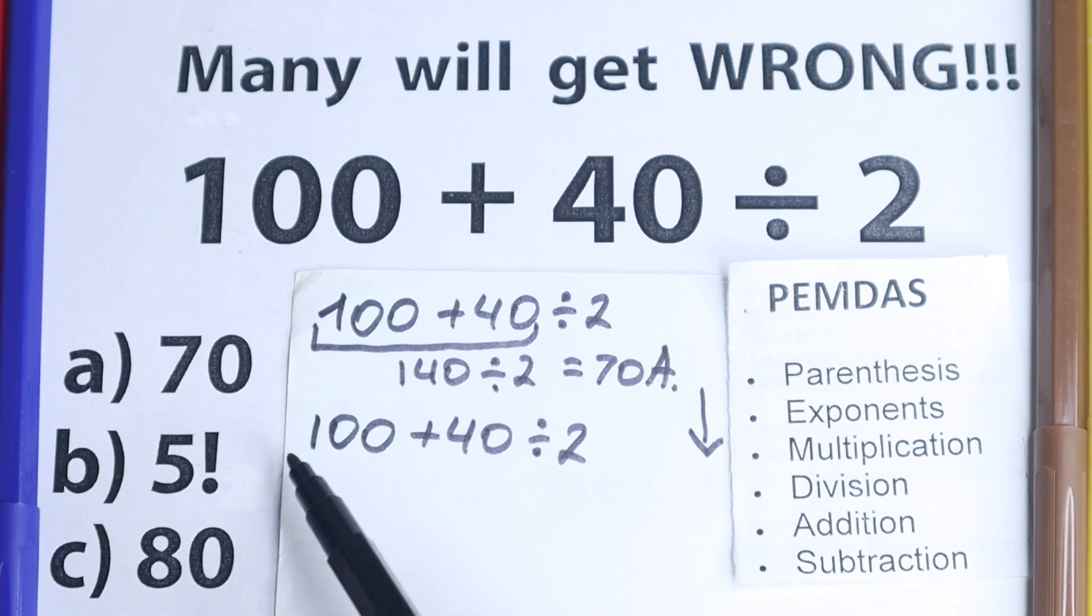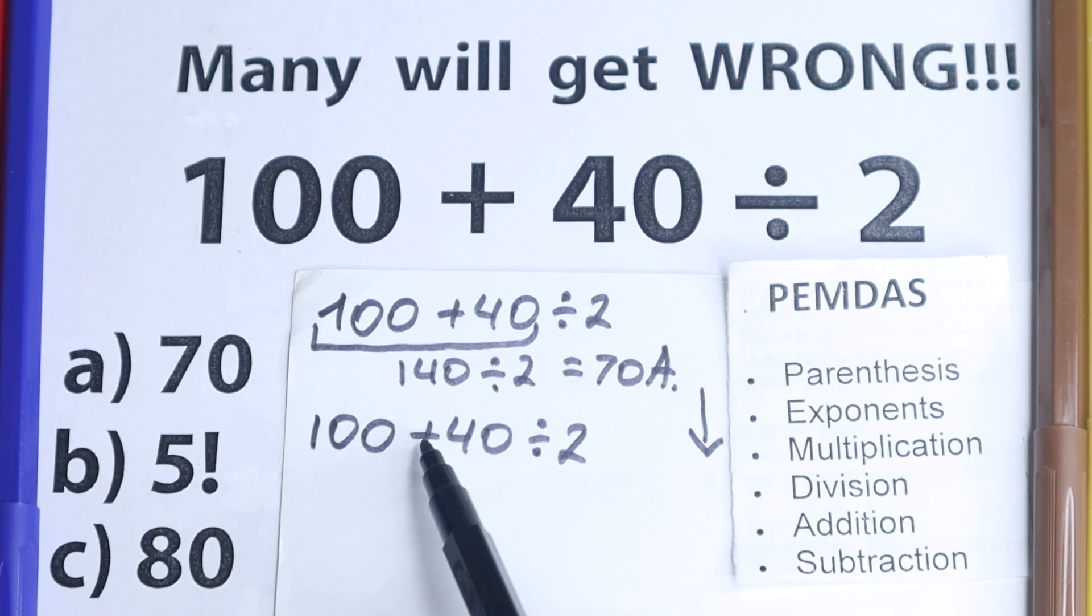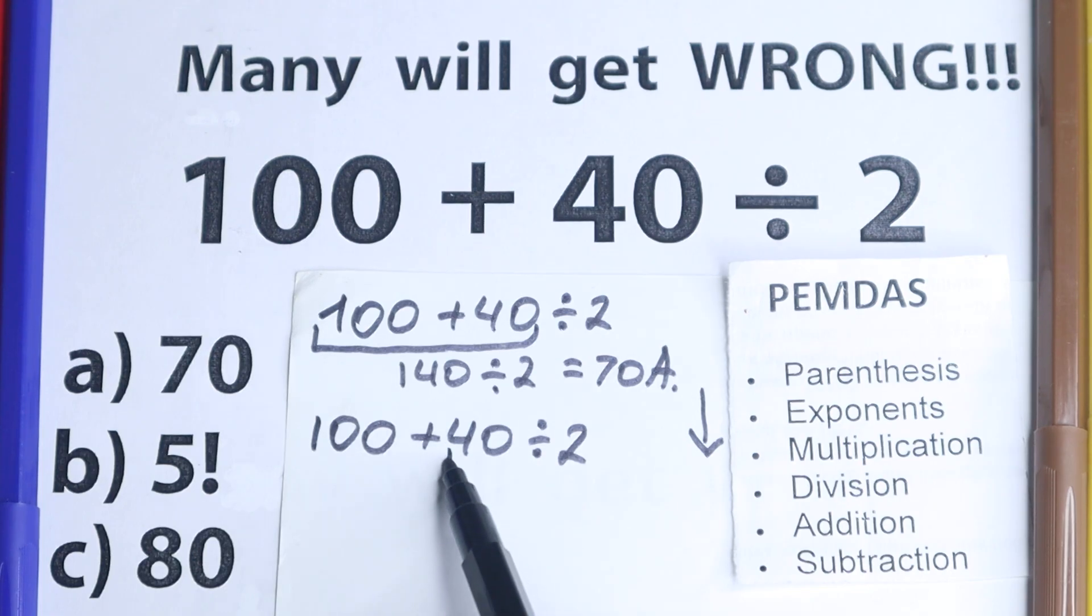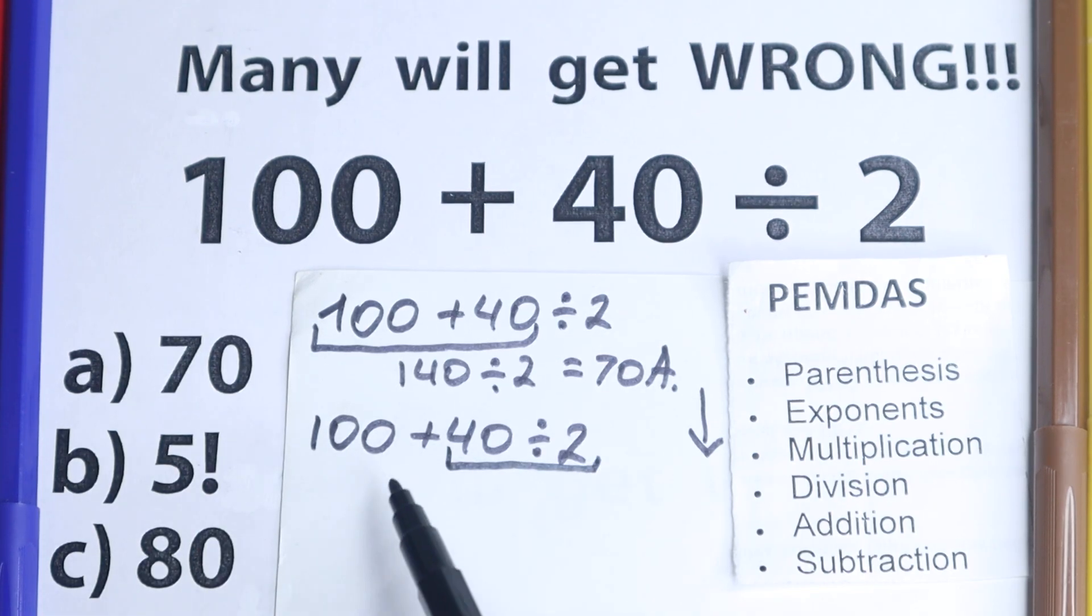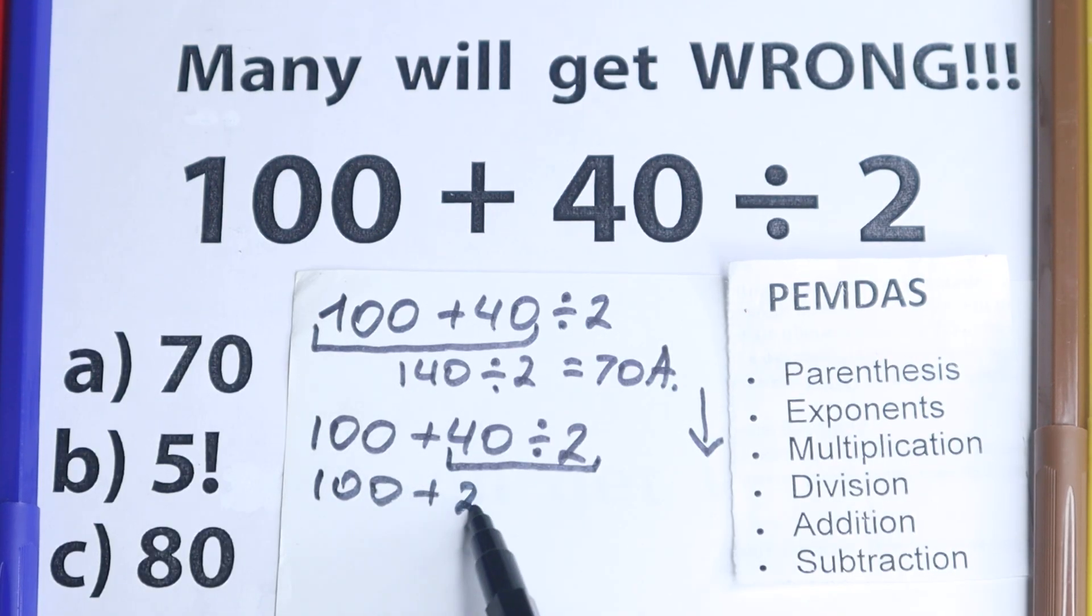What about the next step? Multiplication division part. Let's look at it real quick. Are there any division right here or multiplication? Yeah, we have division right here. So we need to start from this division. We have 100 plus 40 divided by 2 equals 20. So it looks like 120.